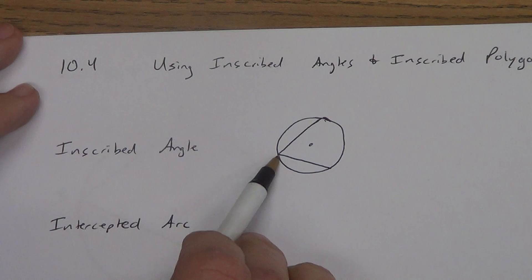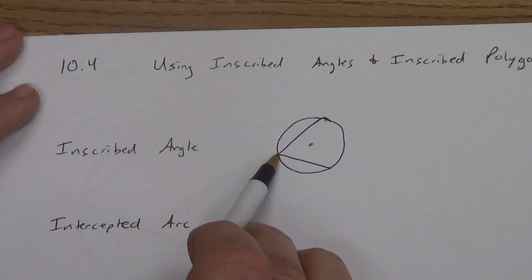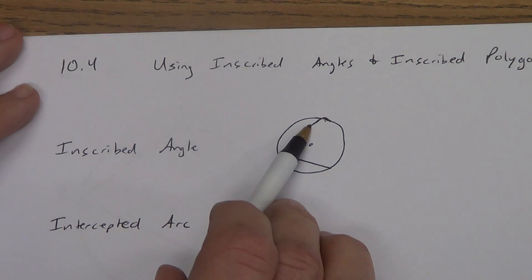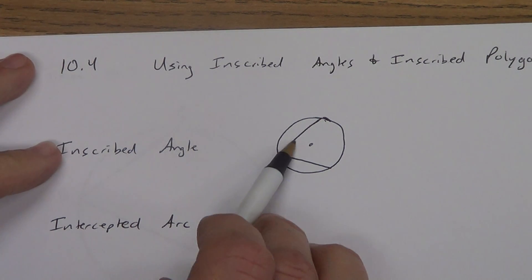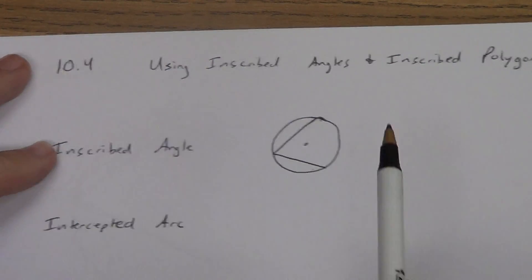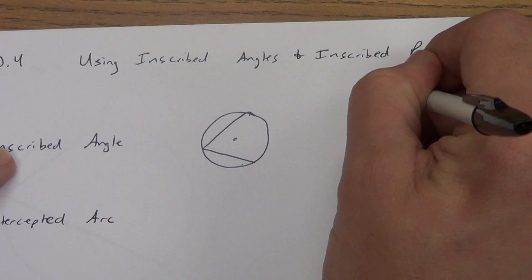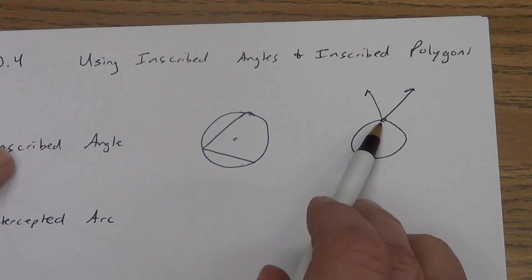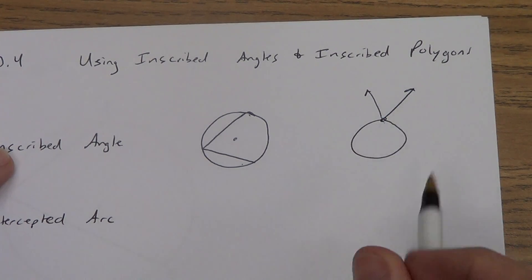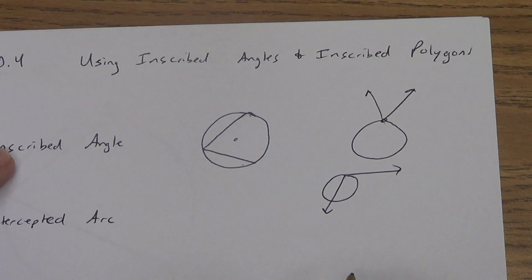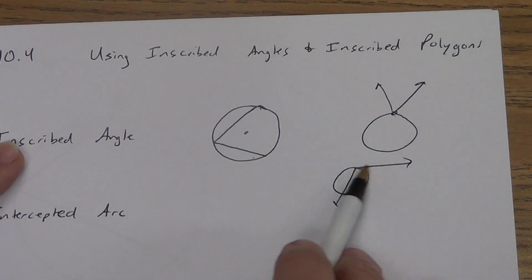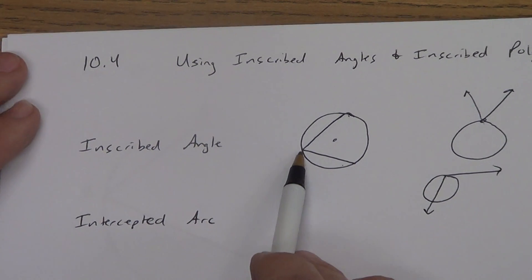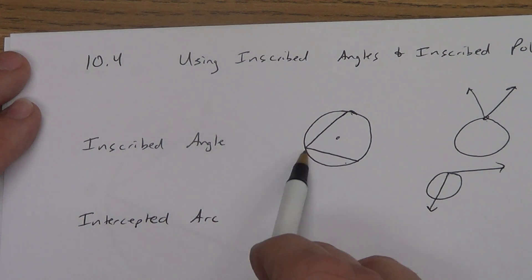An inscribed angle is an angle whose vertex is on the circle, and the sides are actually chords. This is not considered an inscribed angle if its vertex is on the circle but the sides are not inside as chords. And this is not an inscribed angle either — yes, its vertex is on the circle, but this side is not inside the circle. We'll actually deal with that in another lesson. So an inscribed angle: vertex is on the circle, and the sides of the angle are chords.